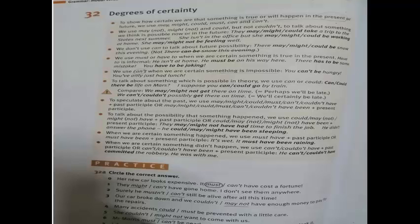To talk about the possibility that something happened, we use 'could/may/might + have + past participle', or 'could/may/might + have been + present participle.' When we are certain something happened, we use 'must have + past participle' or 'must have been + present participle', for example 'it's wet — it must have been raining.' When we are certain something didn't happen, we use 'can't/couldn't + have + past participle' or 'can't/couldn't + have been + present participle.'